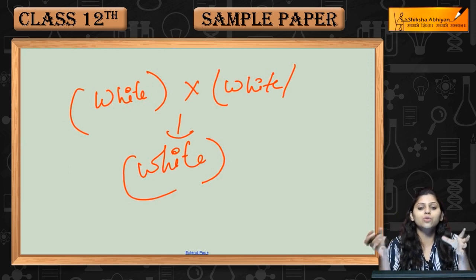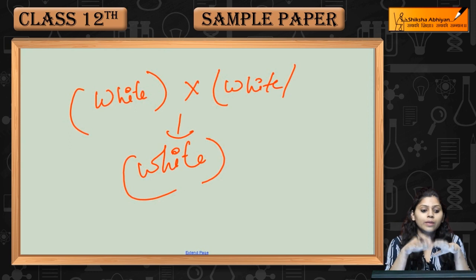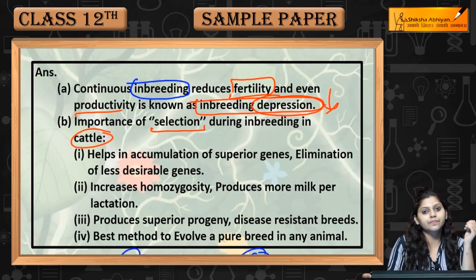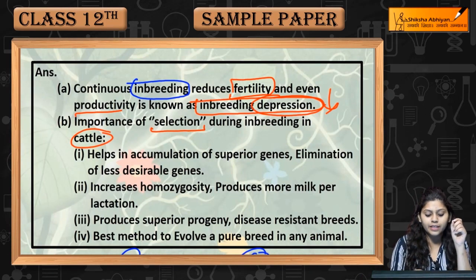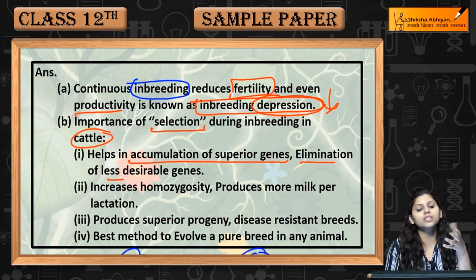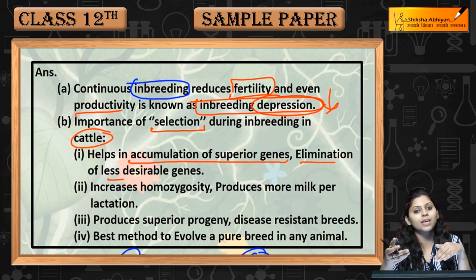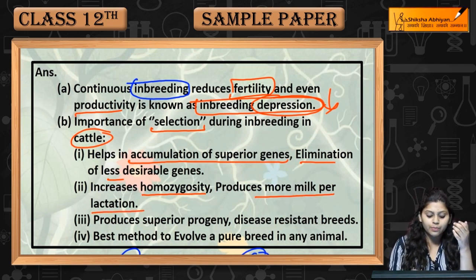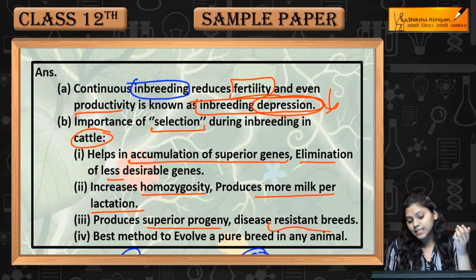If both parents have a good variety, we select, cross and breed so that we get better production. Selection during inbreeding leads to accumulation of superior genes and elimination of less desirable genes. The superior genes are carried to the next progeny and the less desirable genes are eliminated. This increases homozygosity, so we can produce more milk. The superior genes might also include disease-resistant traits.